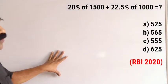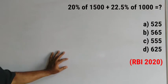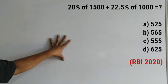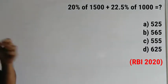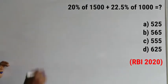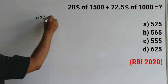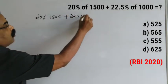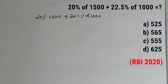Here is your first question: 20% of 1500 plus 22.5% of 1000 equals what? Four options are also given to you. This is a previously asked question selected from the RBI Assistant exam. Let us write that question here and then solve it. What is asked: 20% of 1500 plus 22.5% of 1000 — this is what we need to find out.